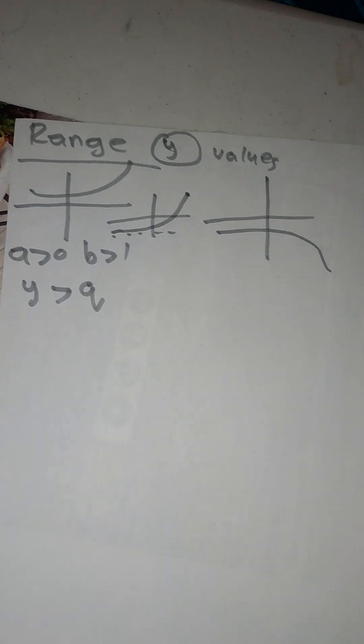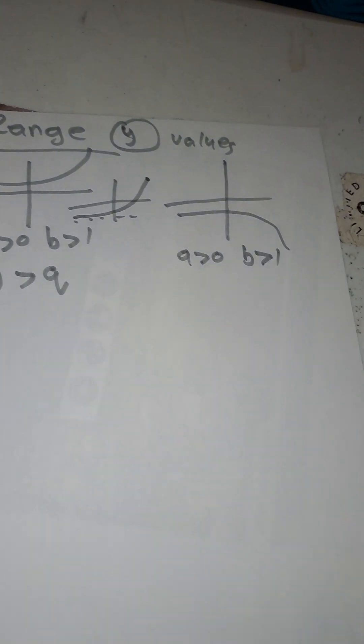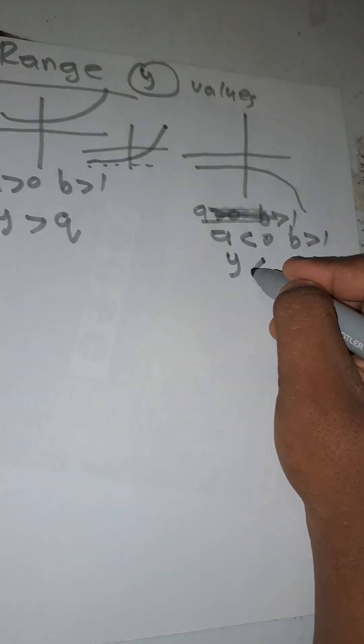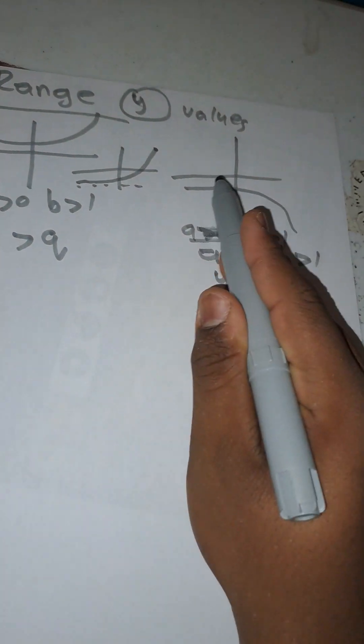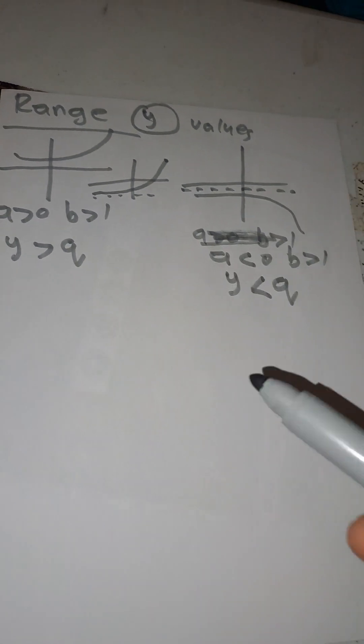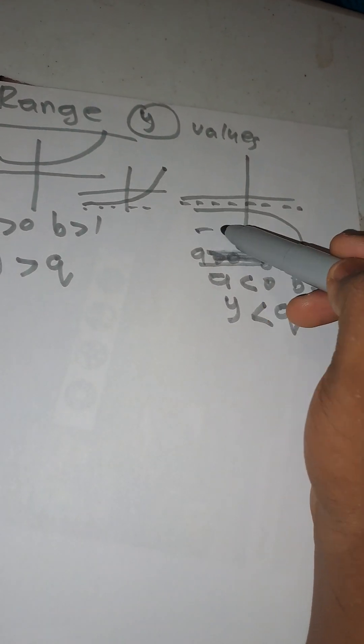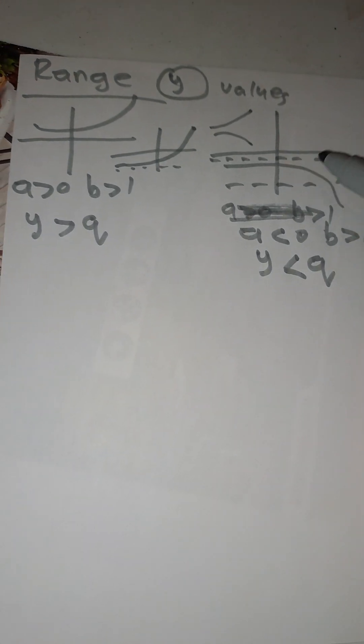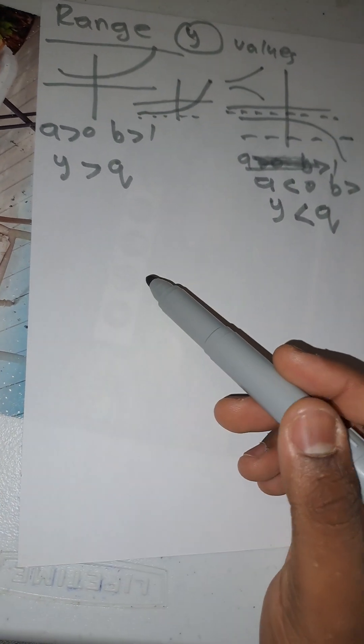For a decreasing-type graph where a is less than zero and b is greater than one, the range becomes y less than q. The graph moves close to the asymptote from below, so all y-values are below q. The asymptote is always close to the graph but the graph stays either above or beneath it.